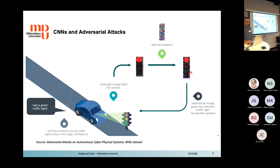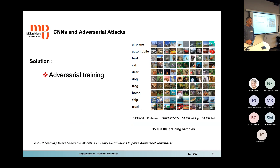Consider you are riding an autonomous car and approaching a traffic light. By adding stickers or other perturbations, a green or red traffic light could be misclassified. You know the consequences of this problem.